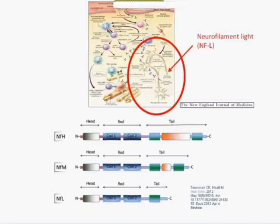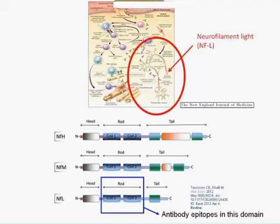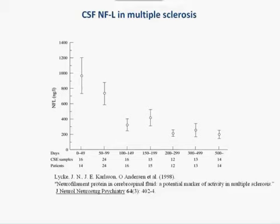The title of my presentation is neurofilament light as a blood biomarker for nervous system disorders. I would like to start with a background slide showing where neurofilament light is expressed in the neuron. The expression levels of neurofilament light are particularly high in large caliber myelinated axons, and the antibodies used are all specific to the mid-domain of the neurofilament light molecule.